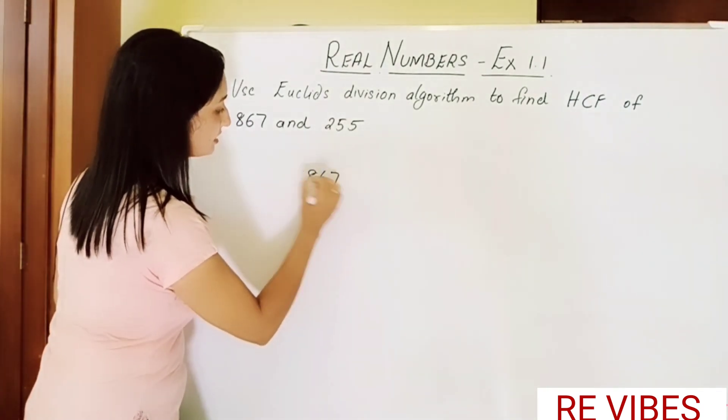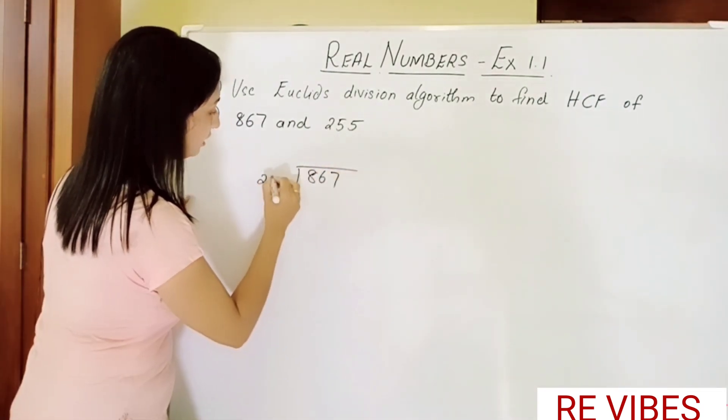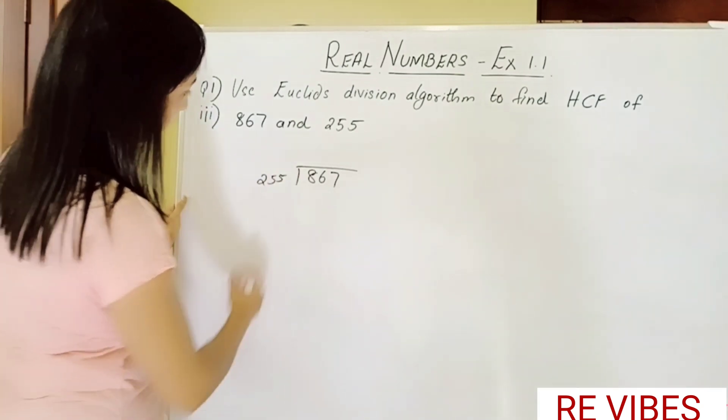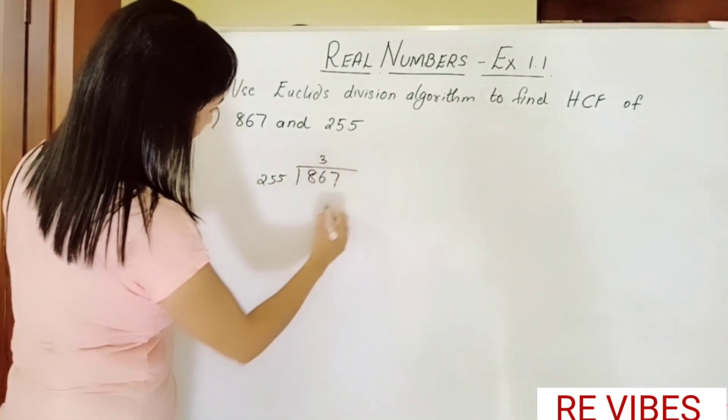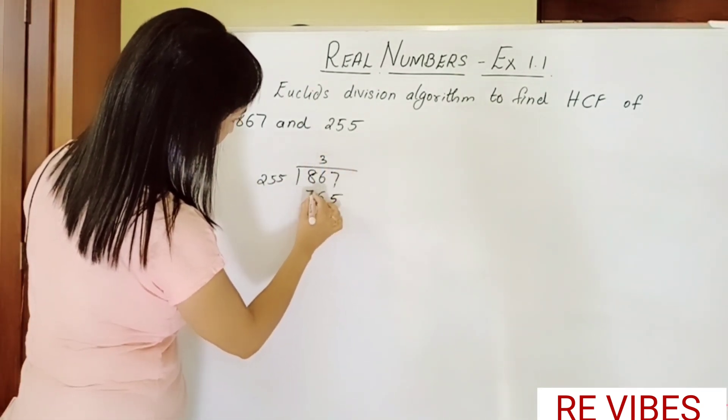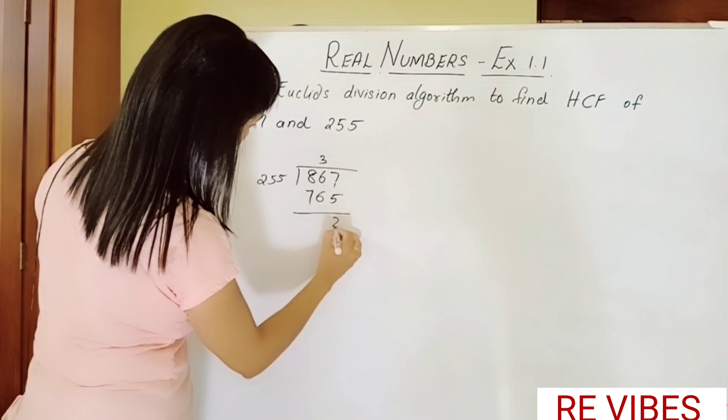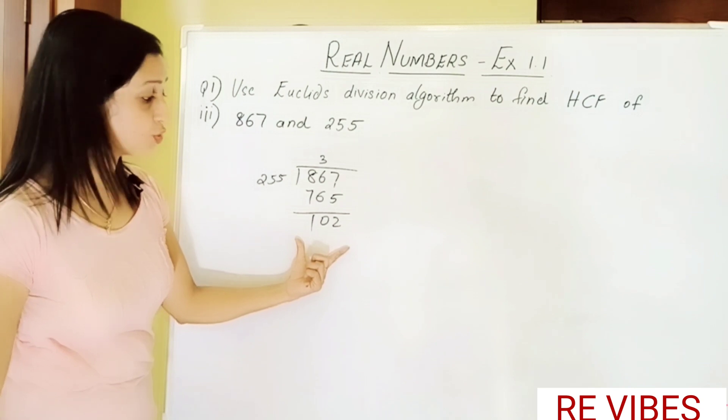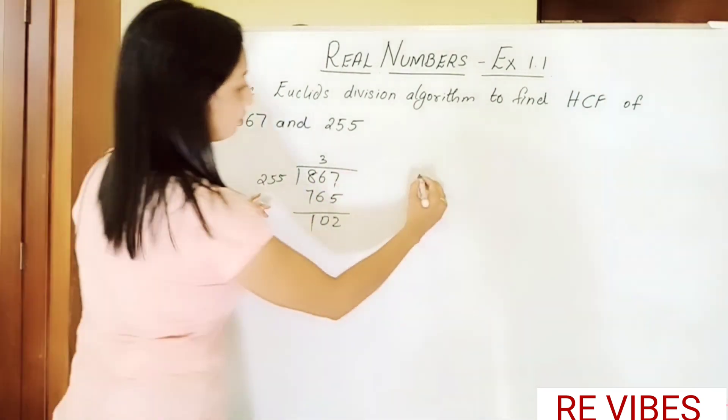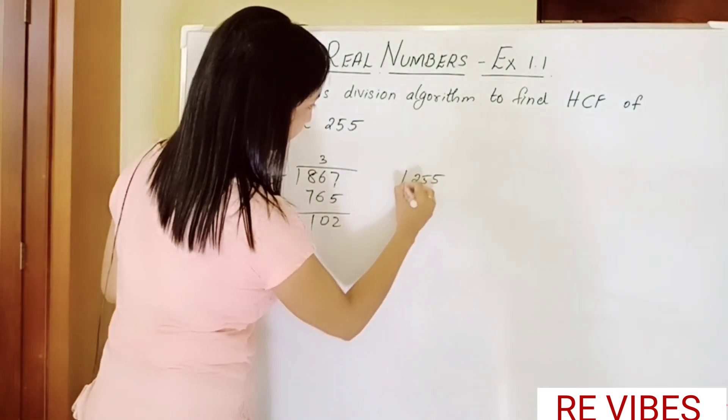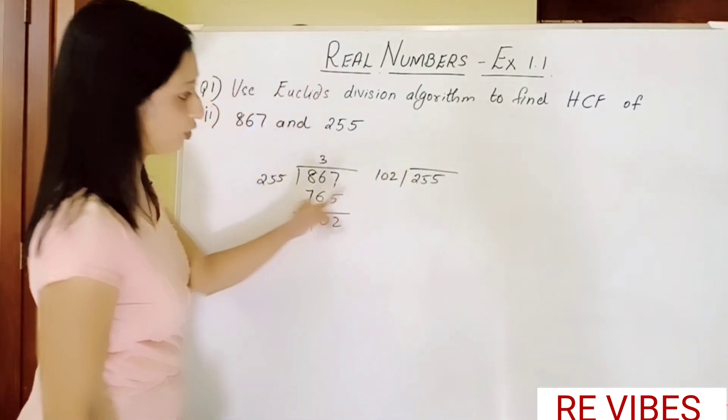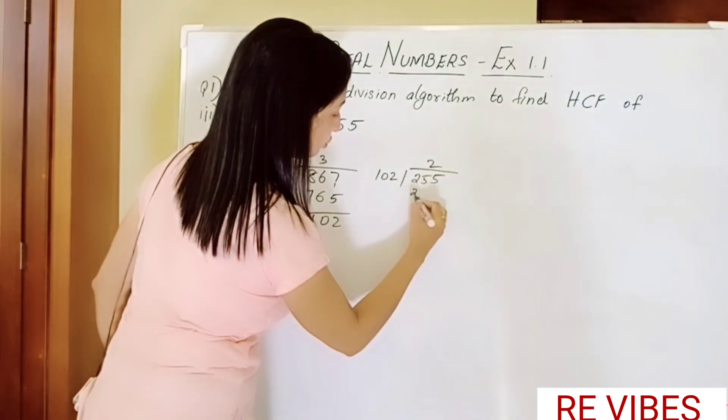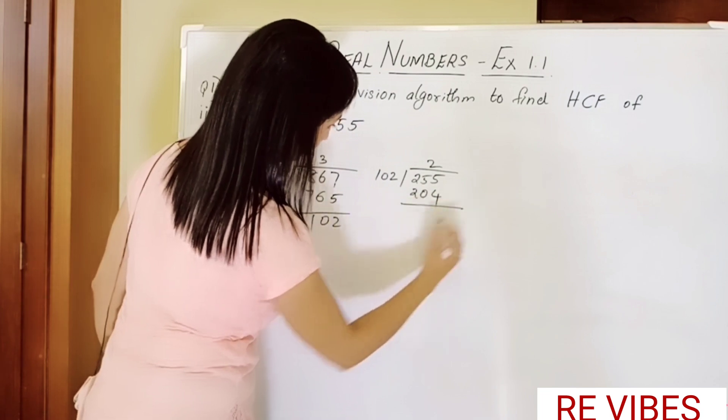So let's start the division: 867 divided by 255. 255 threes are 765, and balance you get 102 which is not 0, so we divide again. So here 255 divided by 102, 102 twos are 204, we get the balance 51 which is not 0 again.